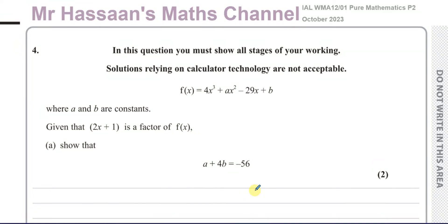Welcome back, this is Mr. Hassan's Maths channel. I'm now answering question number 4 from the October 2023 Pure Mathematics P2 exam, from the Edexcel Pearson's board. It tells us about the expression f(x) = 4x³ + ax² - 29x + b, where a and b are constants. We know that 2x + 1 is a factor of f(x), and we've got to show that a certain equation is true.